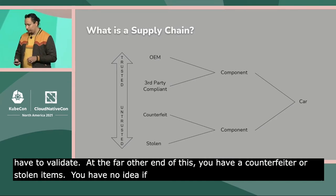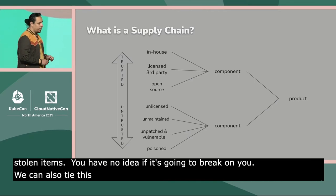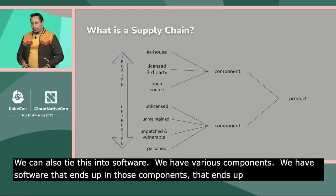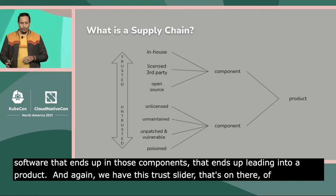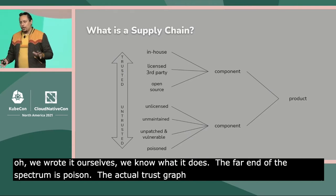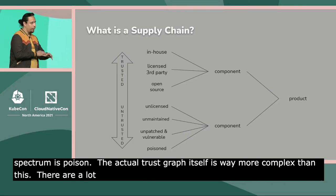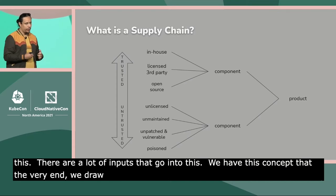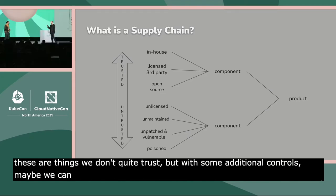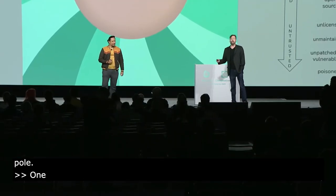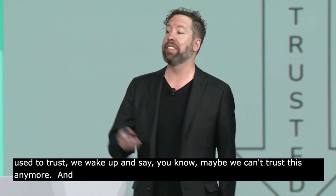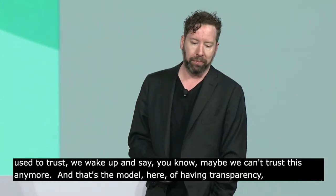We can tie this into software as well: the same concept applies, with components and software leading into a product, and a trust slider ranging from 'we wrote it ourselves' all the way to 'poisoned.' The actual trust graph is far more complex — there's a lot of input into whether you should trust something. We draw a line: things we trust and bring into our infrastructure, things we can bring in with additional controls, down to things we don't want to touch with a hundred-foot pole. Things we used to trust, we can wake up and no longer trust — having transparency allows you to react when that becomes the case.